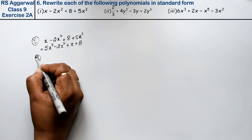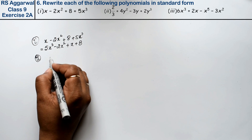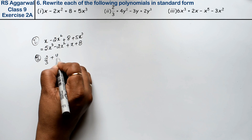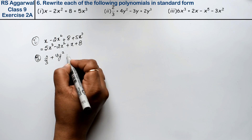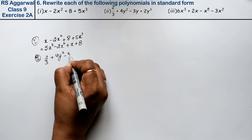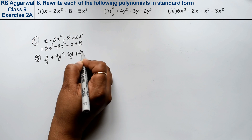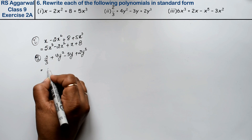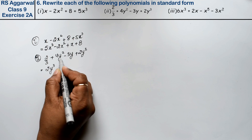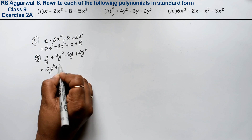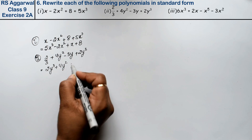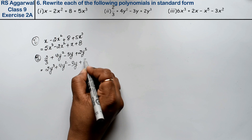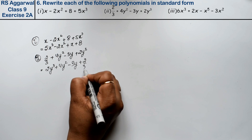Let's do the second part. Second part is: 2 upon 3 plus 4y square minus 3y plus 2y cube. Now in standard form we write the first term as the highest degree. The answer is: 2y cube plus 4y square minus 3y plus 2 upon 3.